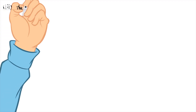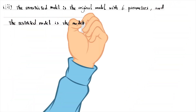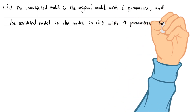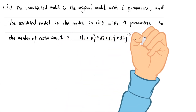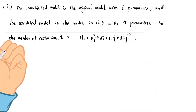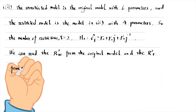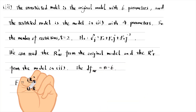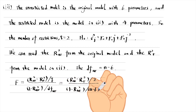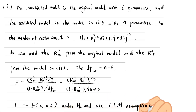For part 3, the unrestricted model is the original model with 6 parameters, and the restricted model is the model in part 2 with 4 parameters, so the number of restrictions is 2. The null hypothesis is that the parameters in the original model follow a quadratic in the lag. We can read the two R-squares from the unrestricted and restricted models. The degrees of freedom in the unrestricted model is n minus 6. We can use the R-squares form of the F-statistic to do the F-test. The F-statistic follows the F-distribution under the null hypothesis and the six classical linear model assumptions.